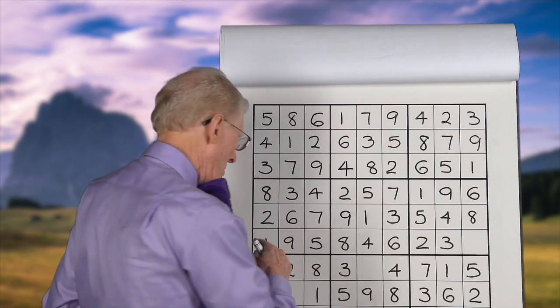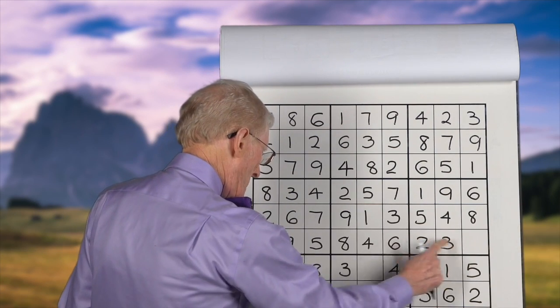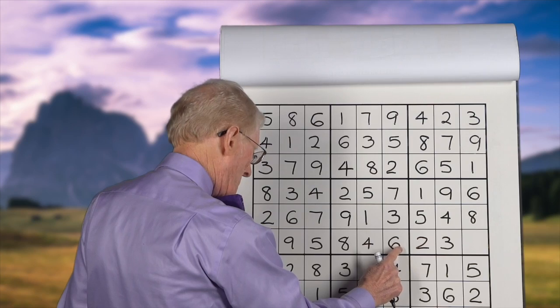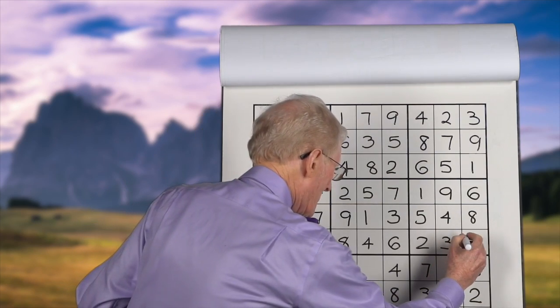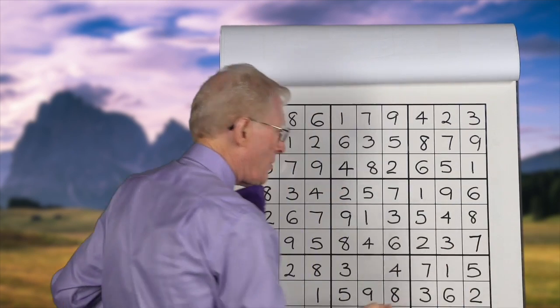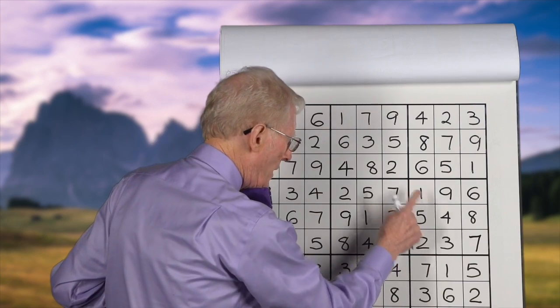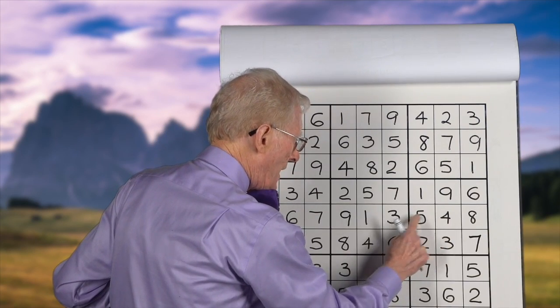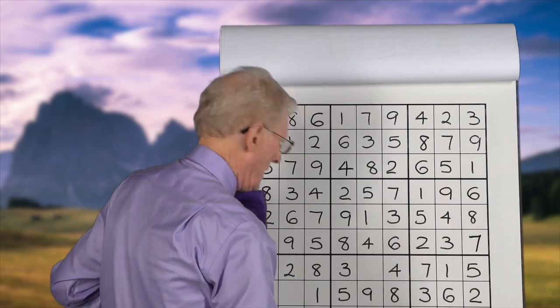Now we'll do this row here. 1, 2, 3, 4, 5, 6. It's a 7. And again, we can double-check or self-check ourselves by going 1, 2, 3, 4, 5, 6, 7, 8, 9.